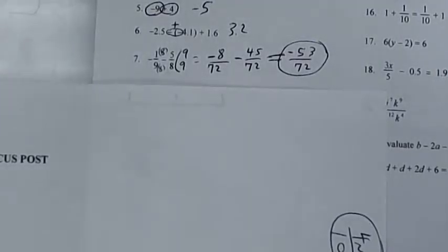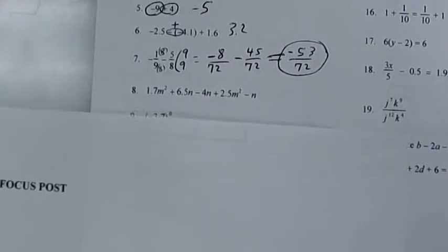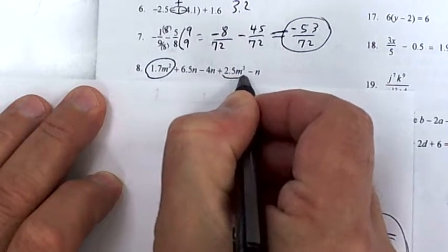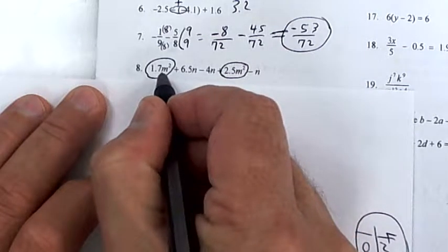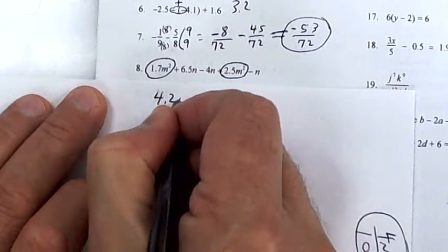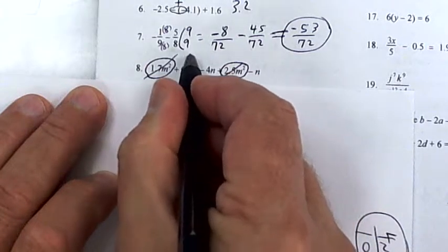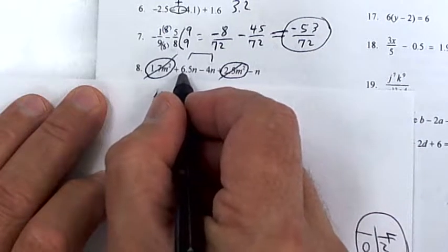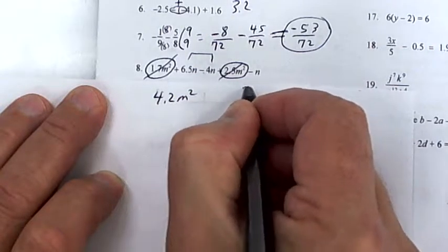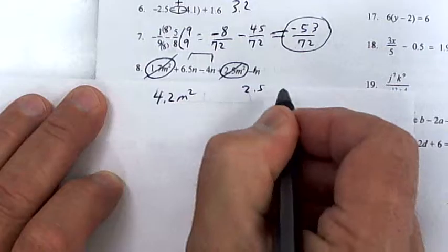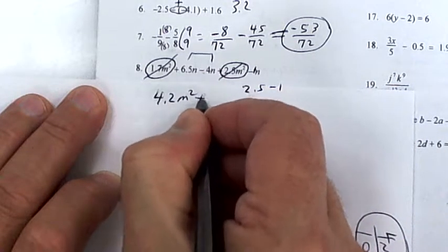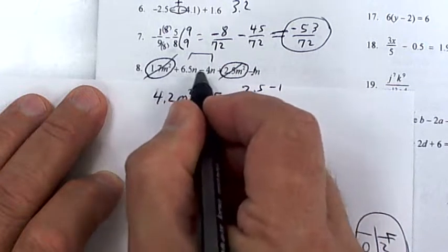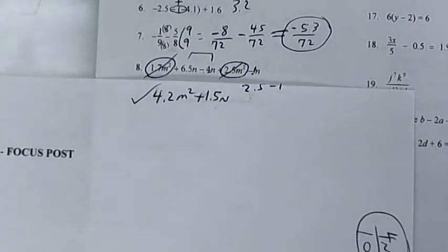Try to reduce by twos, threes, and fives. Collecting like terms: this one has a square and that one has a square, so circle them and add — that's 4.2. Then 6 minus 4 is 2.5, so 2.5 minus that one, plus 1.5. In the end, 4 and 1 makes 5, so 6 minus 5 is 1.